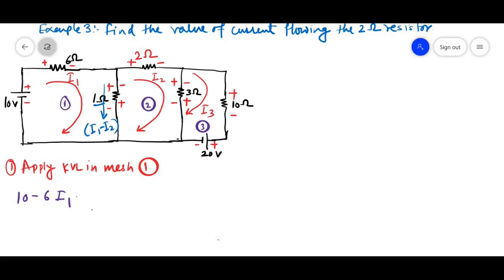So, it is minus 1 times I1 minus I2 equal to 0. If you solve it, we will get 7 I1 minus I2 equal to 10. This is our first equation for mesh 1.